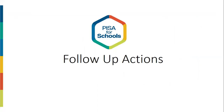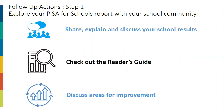You should now have a better understanding of how to interpret your school's results. Here are some ideas about what you can do next. Follow-up action step one: explore your PISA for Schools report with your school community. Share, explain, and discuss your school results with teachers, parents, students, local education authorities, other schools, and community actors. Share what you've learned from this tutorial with your peers and encourage them to watch it. Check out the reader's guide for more in-depth explanations of key concepts used in your school report. Discuss areas for improvement with colleagues and apply the insights gained to design and implement concrete steps for improving teaching and learning in your school.